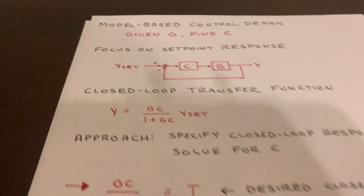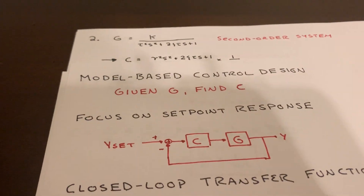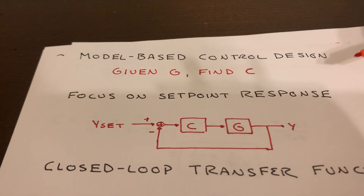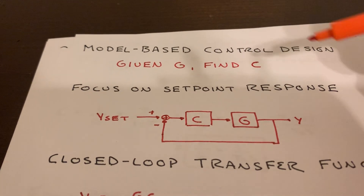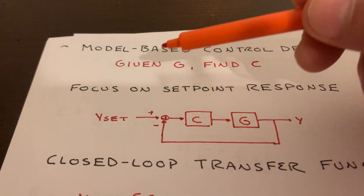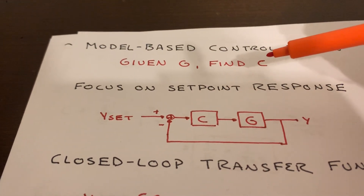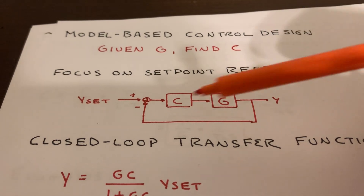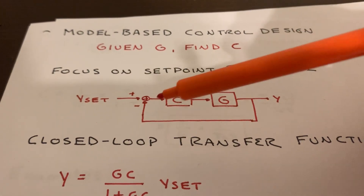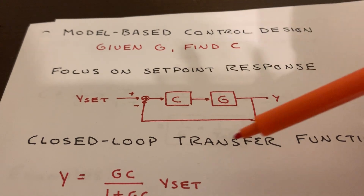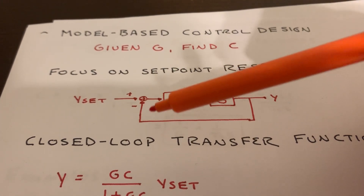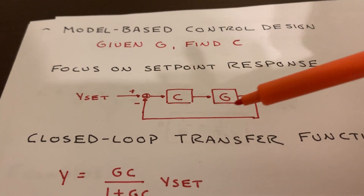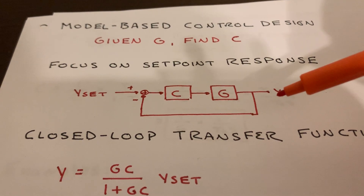So let's take a look at the notes. Here we're going to talk about model-based control design. Our goal is, given our process transfer function, how do we find the associated controller? We're going to focus on the set point response. We have our set point going into our feedback loop, so our Y is coming back. We're comparing it, taking the difference between these two. That gives us our error signal, which goes into our controller, then goes into our process and gives us our output.